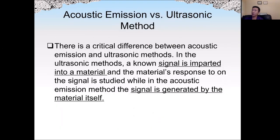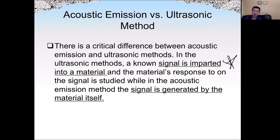There is a major difference between the acoustic emission method and the ultrasound method. In the ultrasound method, a signal is generated by the sensor into the materials, and a receiver receives either the reflected wave or the wave that passes through the materials. In the acoustic emission method, the signal is generated by the material itself. That is the major difference between these two types of methods.